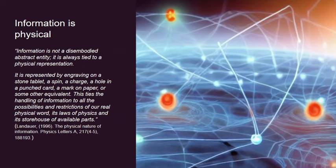Information is physical. Information is not a disembodied abstract entity — it is always tied to a physical implementation. It is represented by engraving on a stone tablet, a spin, a charge, a hole in the punch card, a mark on paper, or some other equivalent. This ties the handling of information to all the possibilities and restrictions of our real physical world, its laws of physics and its storehouse of available parts.